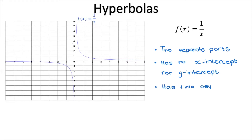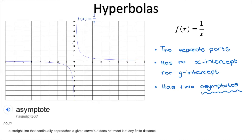Another interesting thing is that the hyperbola has two asymptotes. An asymptote is a straight line that continually approaches a given curve but does not meet it at any finite distance. In plain English, an asymptote is a straight line that the graph gets really, really close to touching but never actually touches or crosses.